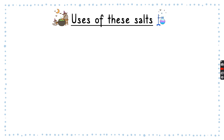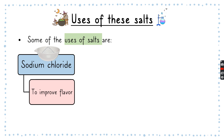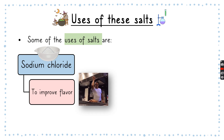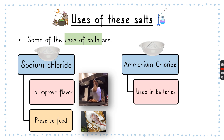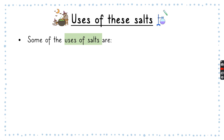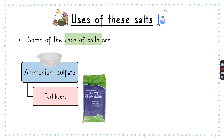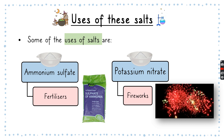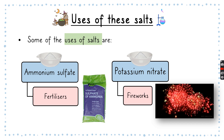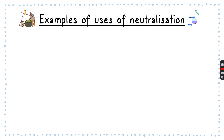What are the uses of these neutralized salts? Sodium chloride is the table salt you can find at home — it helps to improve flavor in food and also helps to preserve food. Ammonium chloride is used in batteries. Ammonium sulfate is used in fertilizers. And potassium nitrate is used in fireworks. We can make all of these salts by mixing an acid and an alkali until they are neutralized, then evaporating the solution to get the solid salt.